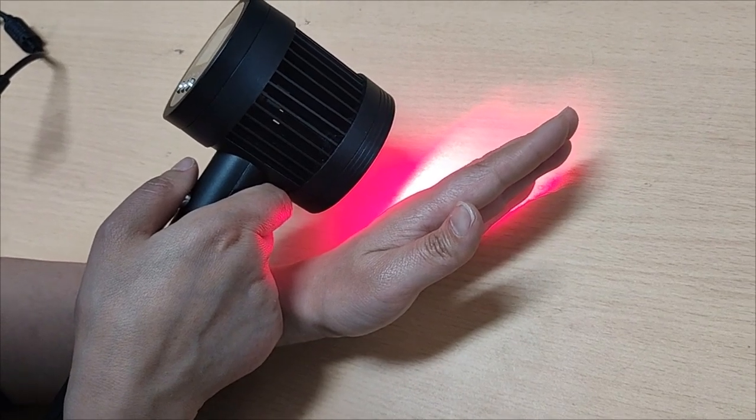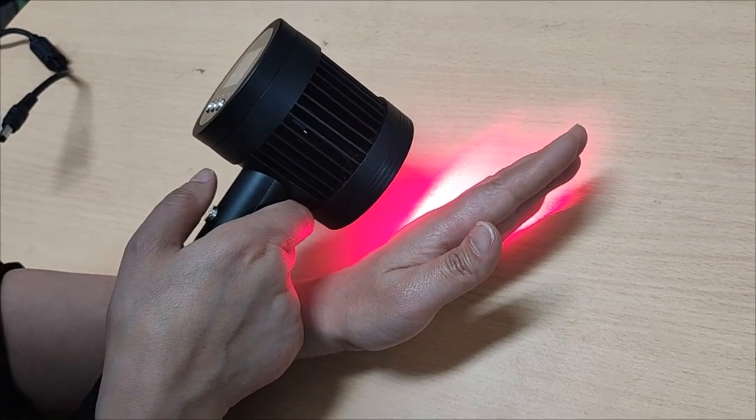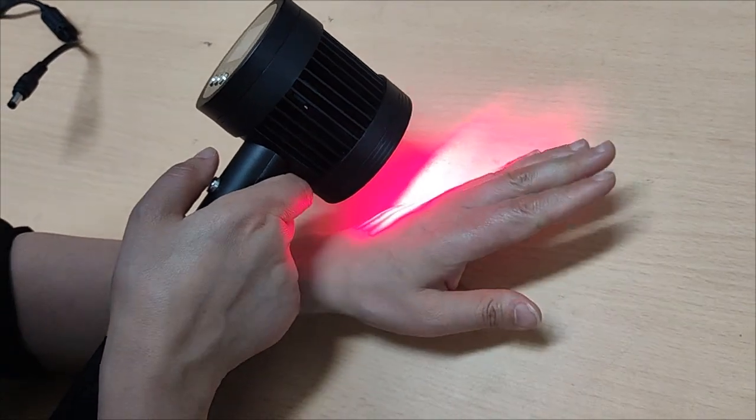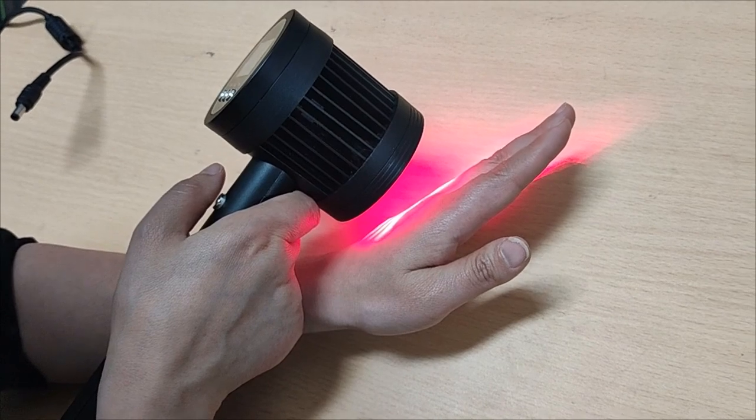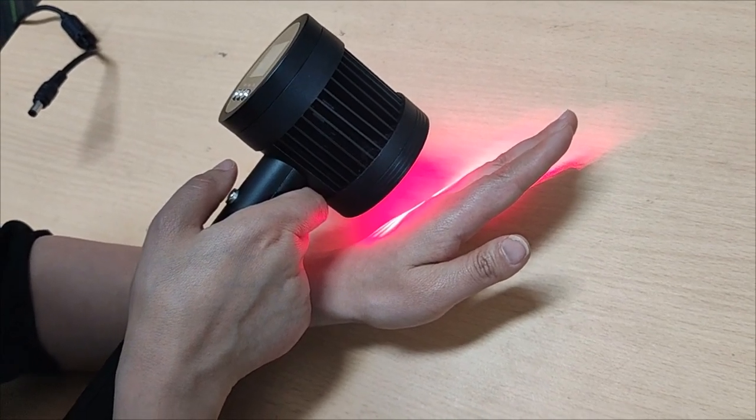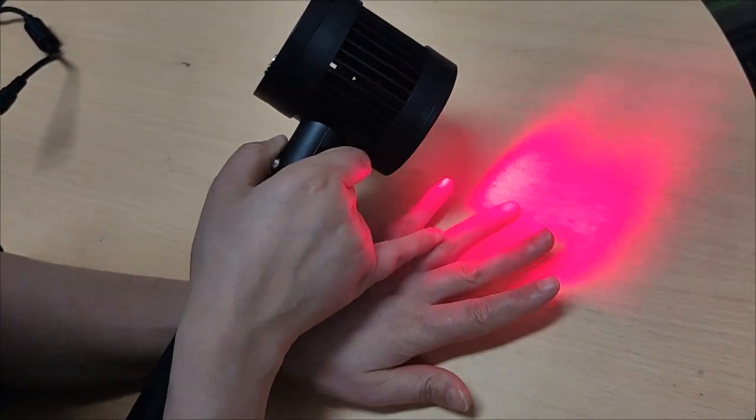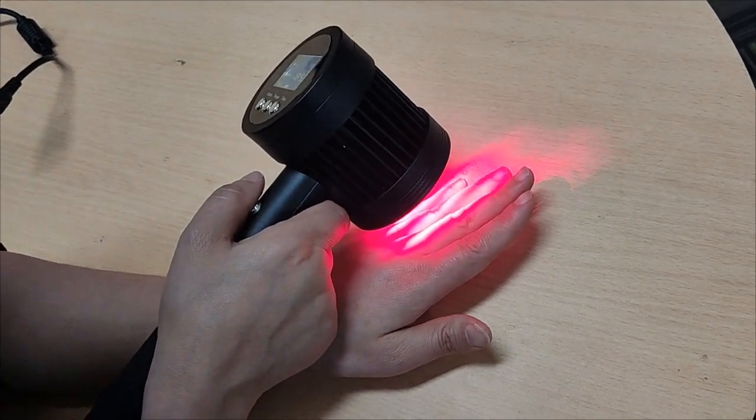Especially for dark skin, we must keep away five centimeters. Each usage, for normal pain, is around five to ten minutes. For example, if only this finger or this part has pain or arthritis, we just use it this way.